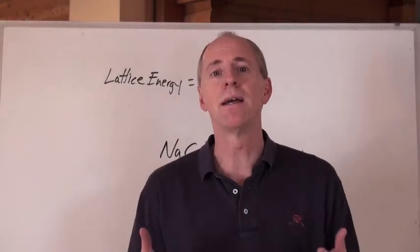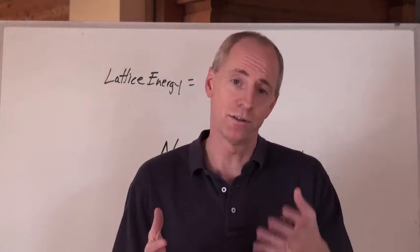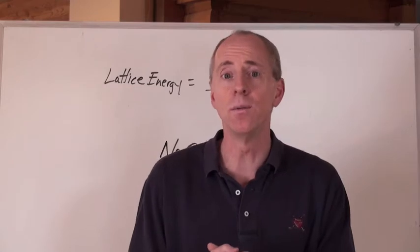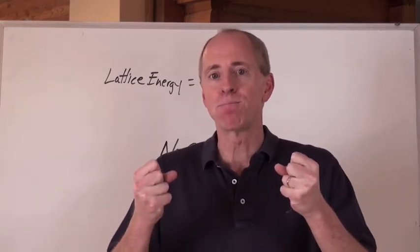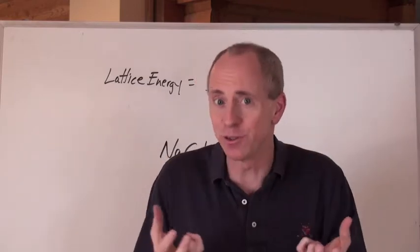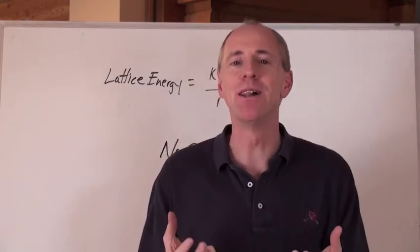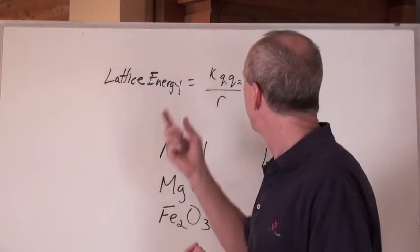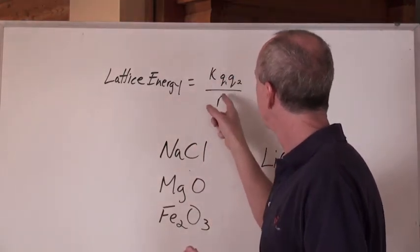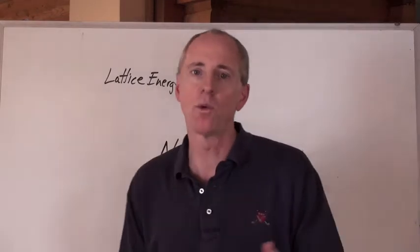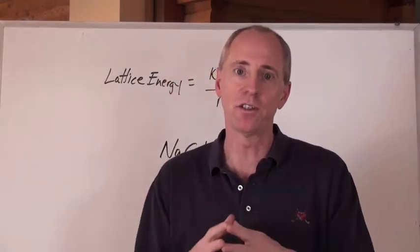Electric charge was defined by someone named Coulomb, a French scientist a few hundred years ago. He described electrical field strength as being measurable by taking the charges of two objects and multiplying them by a constant and then dividing by r squared, but that's for electrical field strength.